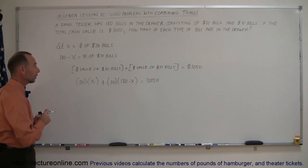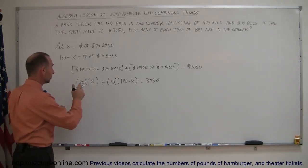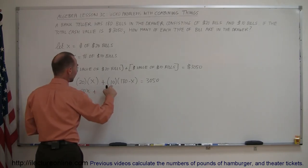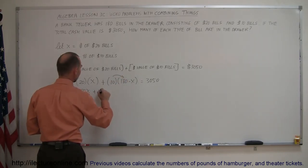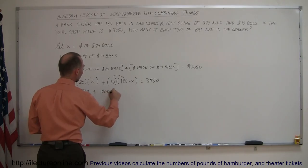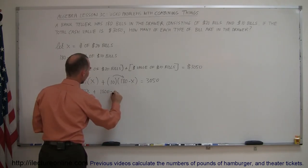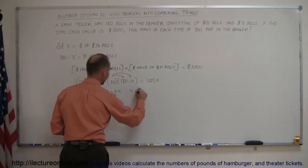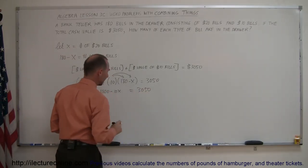All right, now we go ahead and solve that. First, let's get rid of the parentheses. So 20 times x is 20x plus 10 times 180 is 1,800, and plus 10 times minus x. That's not a plus. That would be a minus 10x. So we multiply the 10 by both the 180 and the minus x, and that must equal what's on the right side of the equal sign, which is $3,050.